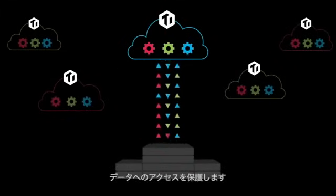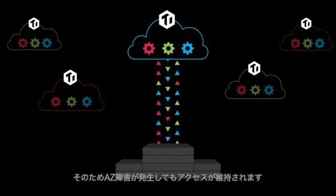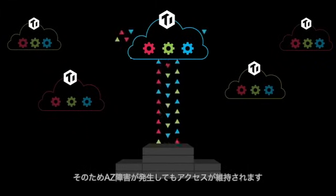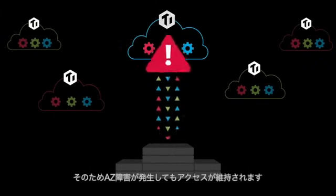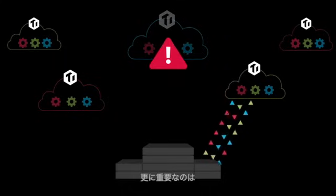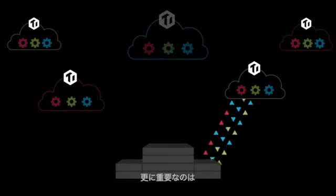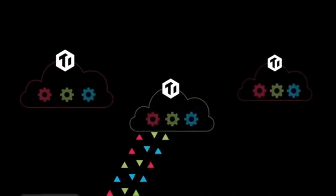TiDB is able to maintain access to your data even in the case of an availability zone failure. Most importantly, data in the key-value store is stored on at least three different availability zones.